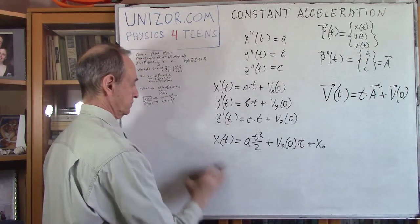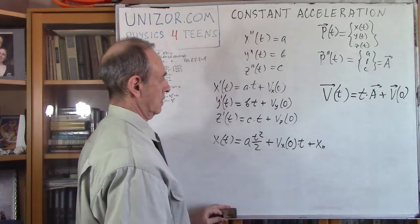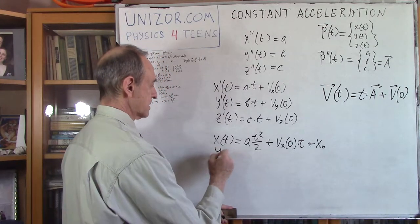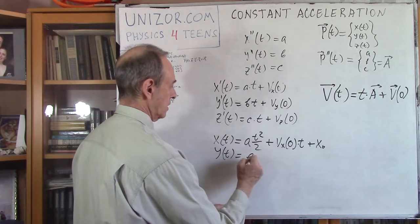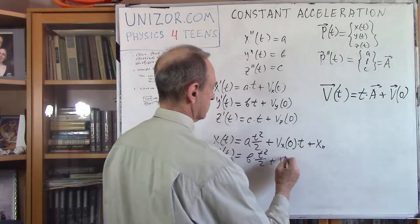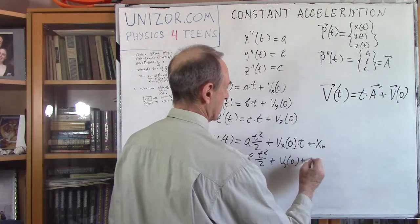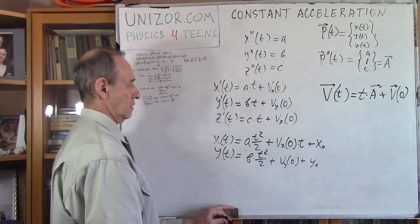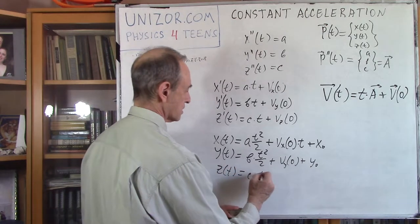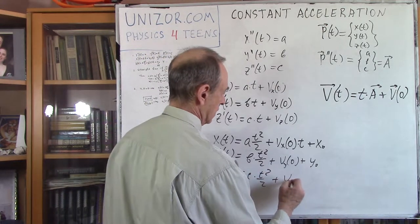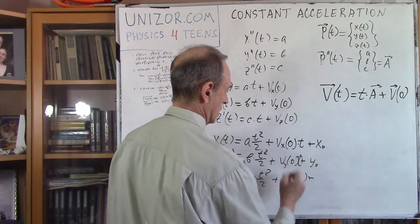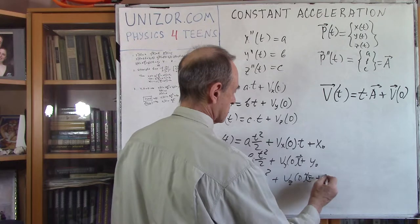Similarly, y of t equals bt-squared over 2 plus vy(0) times t plus y0. And z of t equals ct-squared over 2 plus vz(0) times t plus z0.